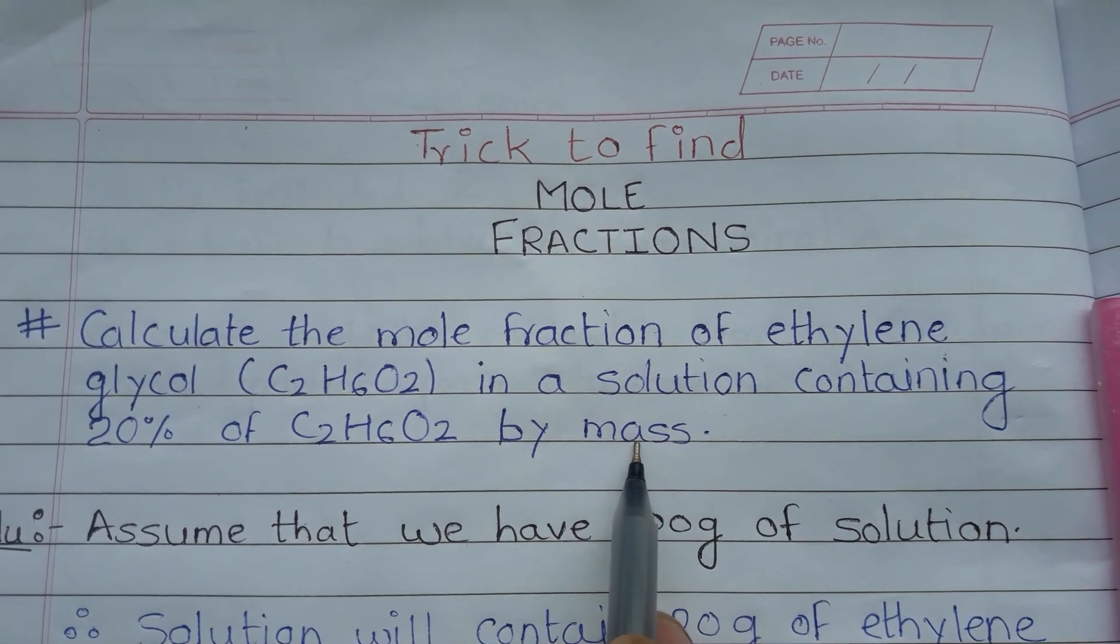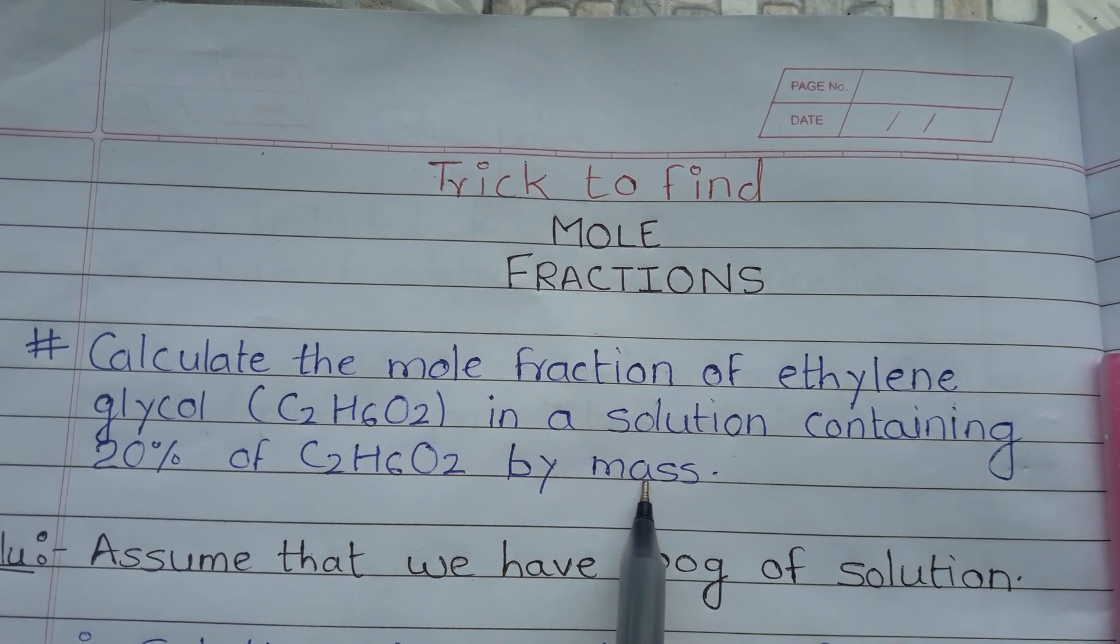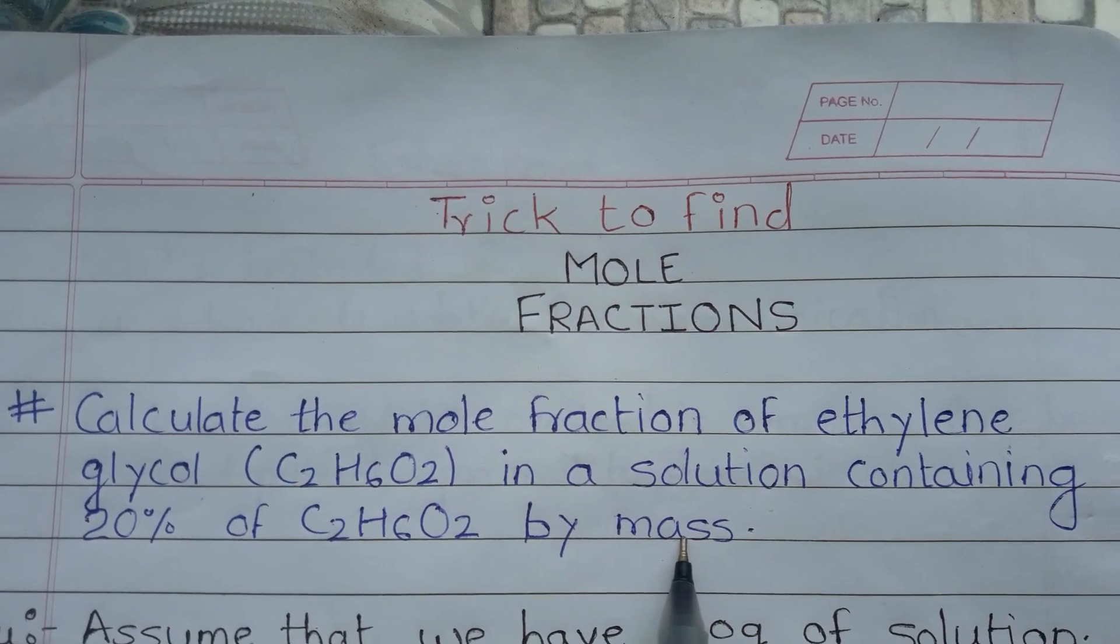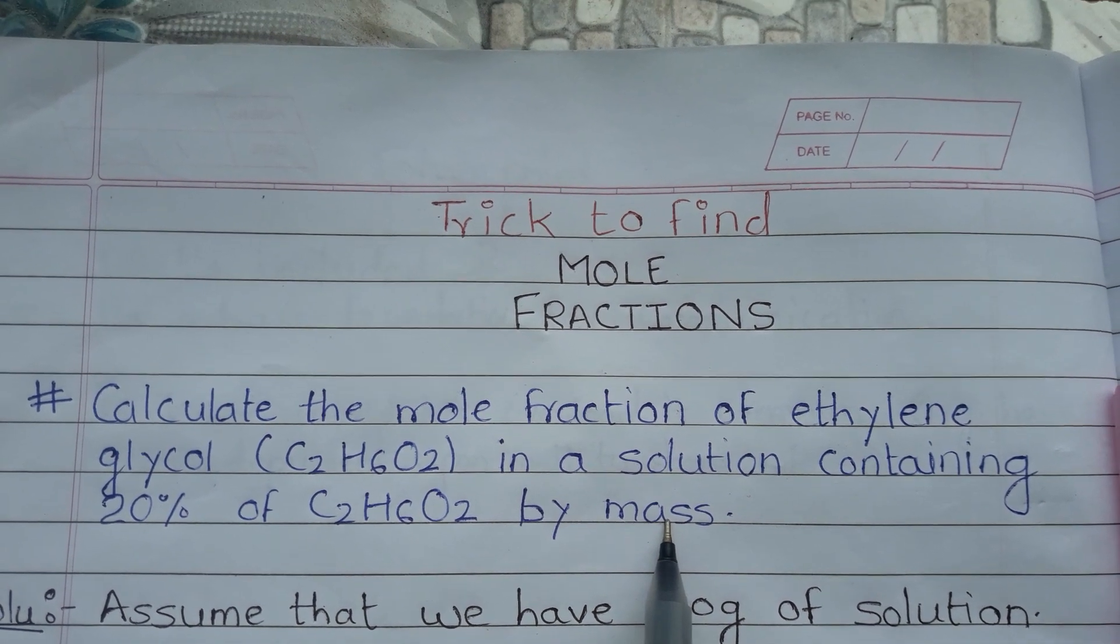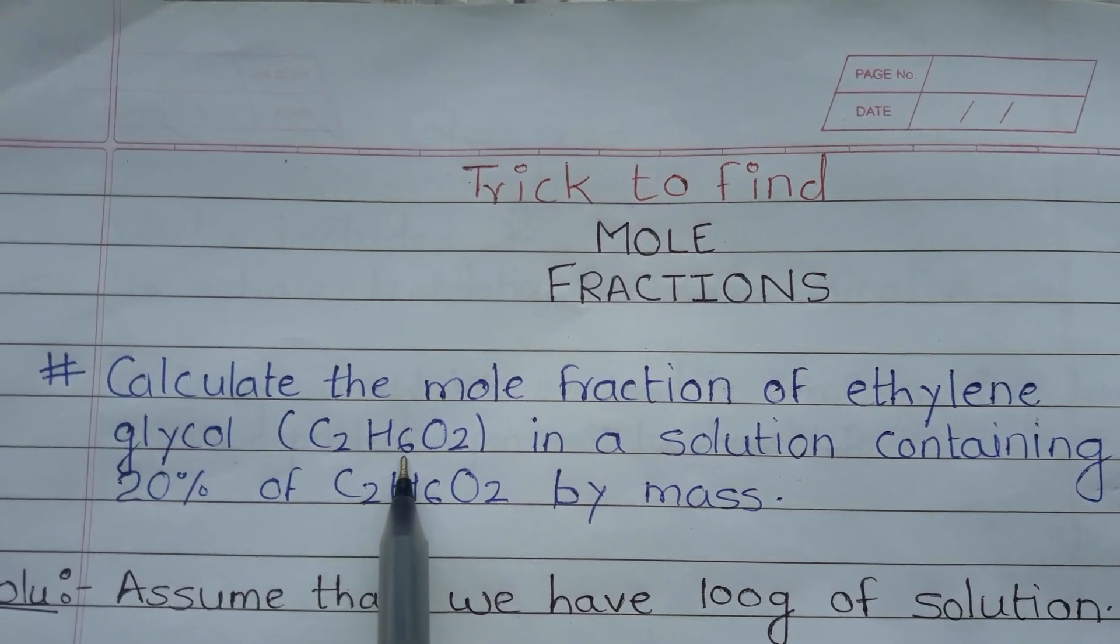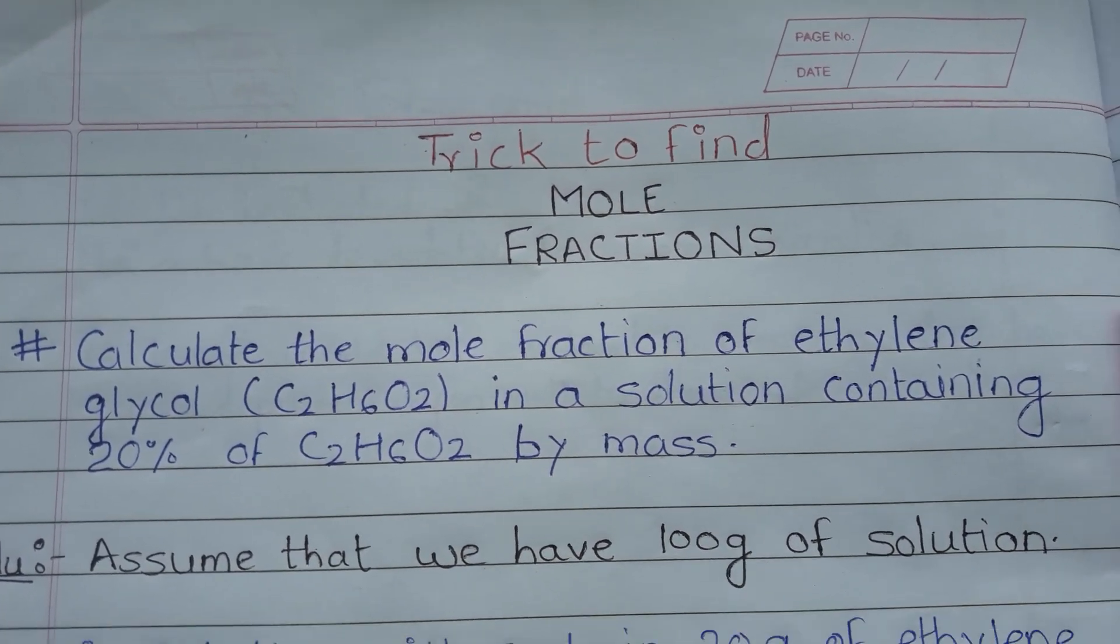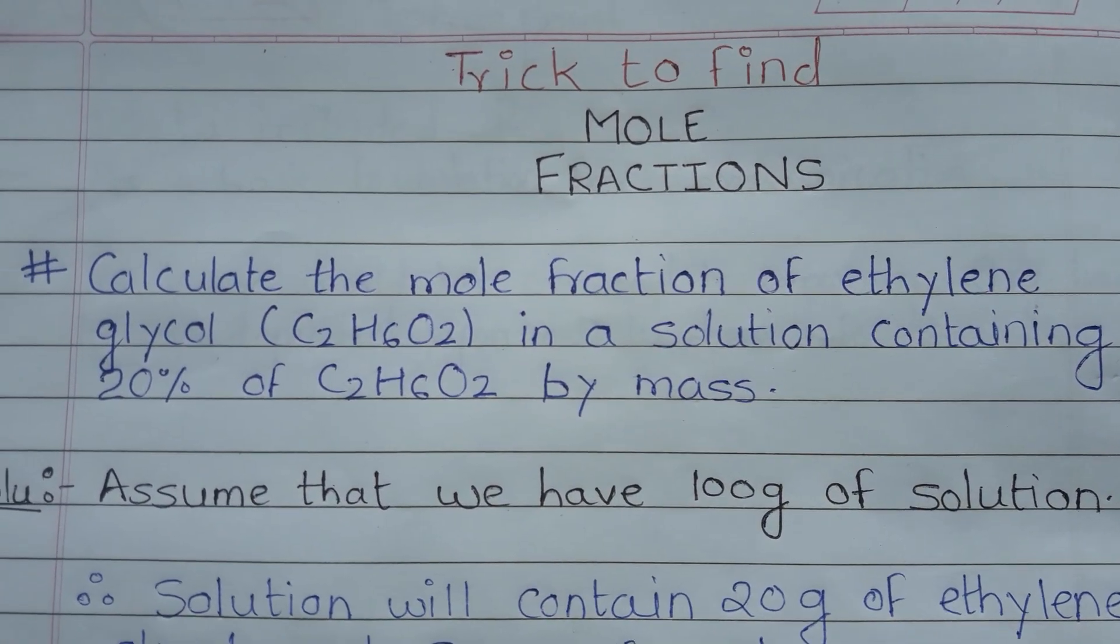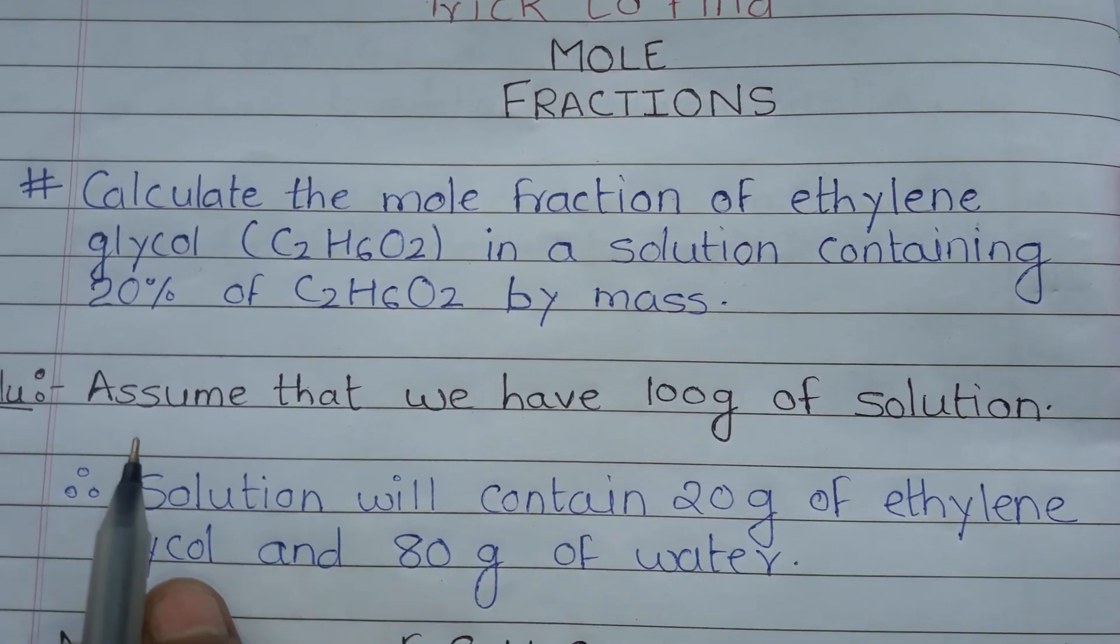We have a solution of ethylene glycol, which is 20% ethylene glycol solution, and ethylene glycol's chemical formula is C2H6O2. So here we have 20% ethylene glycol solution, and we're asked for the mole fraction. For this type of question, we must assume our solution mass.